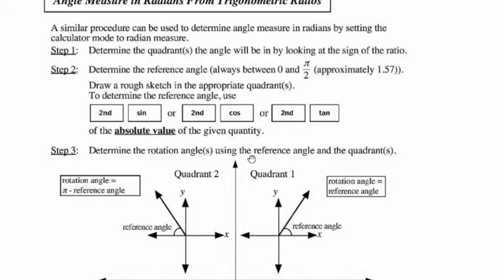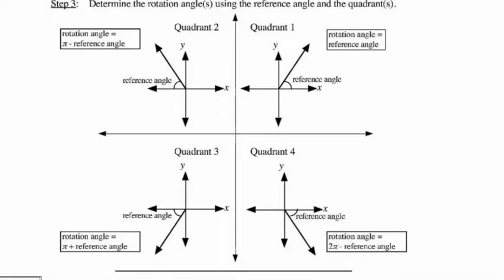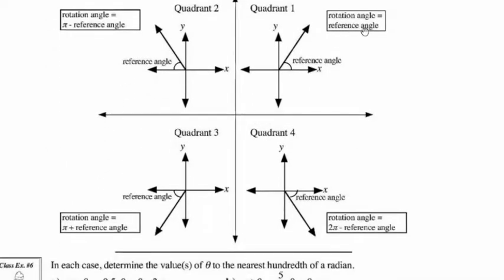So taking a look at some scenarios: if we were in quadrant 1, then the rotation angle will equal what the reference angle says — in other words, what the calculator tells you. Now in quadrant 2, if we know it's going to be in quadrant 2, then the rotation angle is going to be pi minus the reference angle.